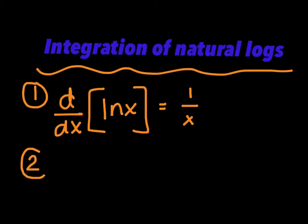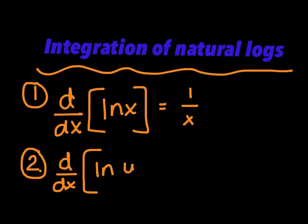Then we have this general rule — important number two. If I said take the derivative of the ln of u, where u could be any function like 2x plus 10 or x squared minus 5x, we're saying the result is du over u. We quickly take its derivative and put it over itself.